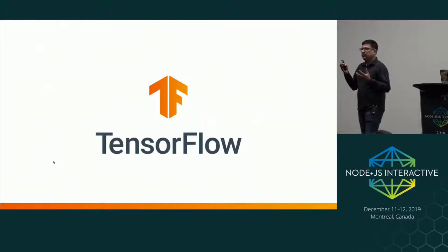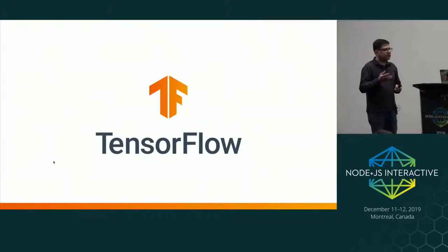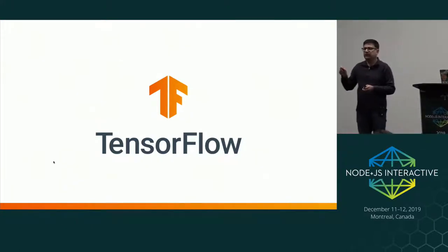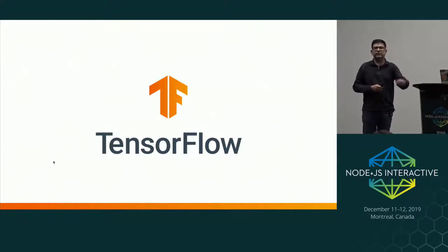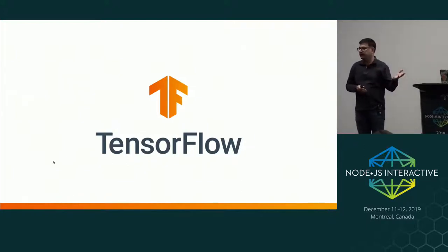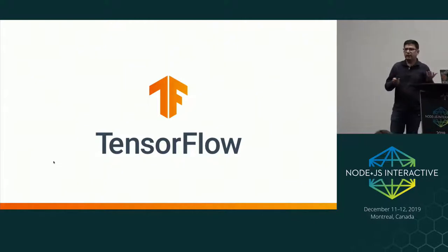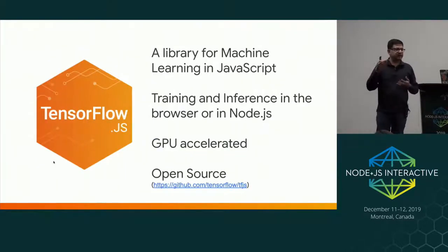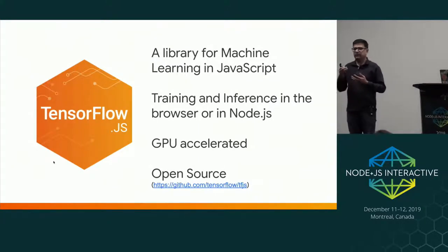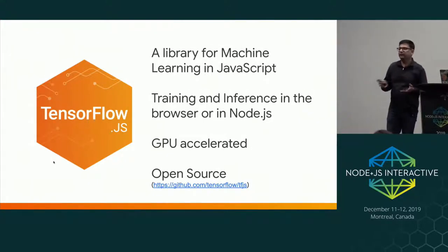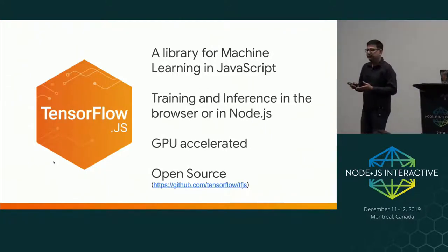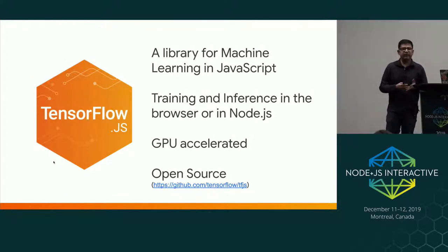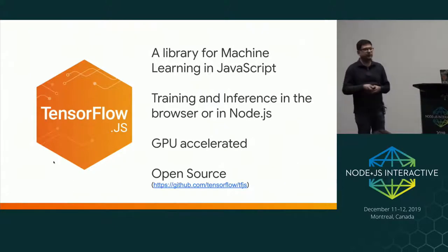This is where frameworks like TensorFlow come in. TensorFlow is an open source library for doing machine learning — it manages the mechanics of training a model, doing back-propagation, adjusting weights, running experiments, and creating a deployed model. It also has a bunch of pre-trained models available that you can use off the shelf. However, TensorFlow was written with a Python front end, and most ML tools today require one to learn Python. Python is termed the language for data science, which is unfortunate because JavaScript is the most widely used programming language.